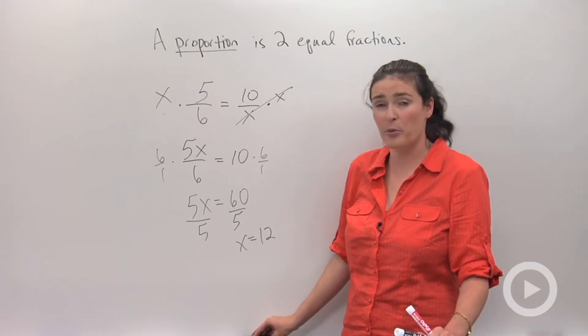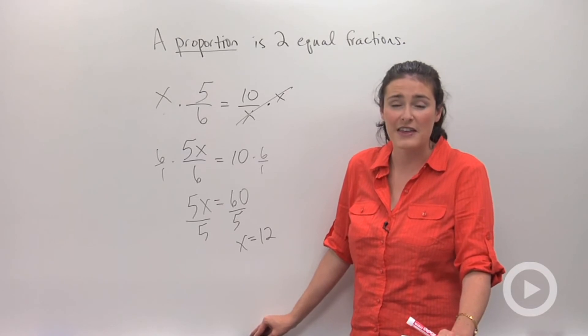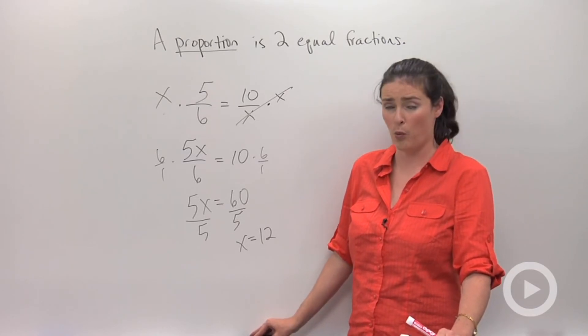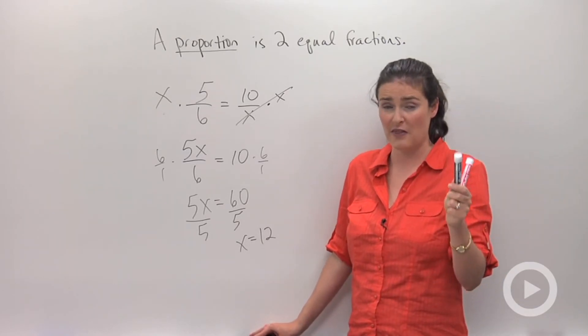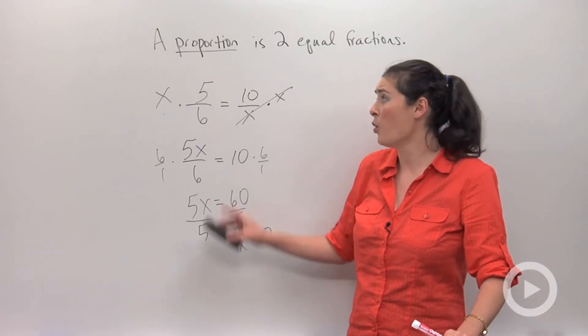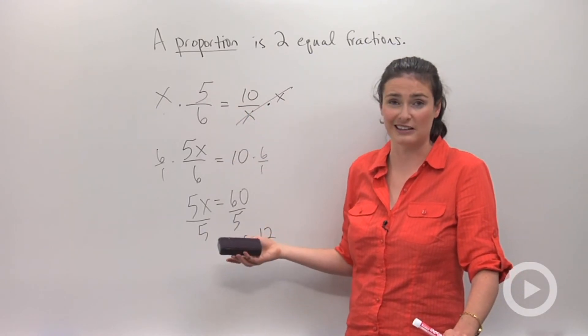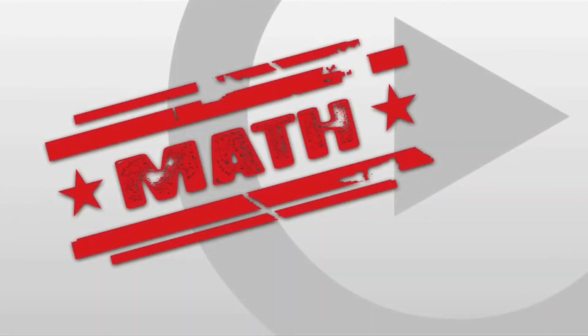So when you guys come across a proportion, which is two equal fractions, think about which method you want to use. Whether it's looking for what's the number you're multiplying by to get from one fraction to the next, whether you choose to cross-multiply, or to do it out using solving techniques like this.